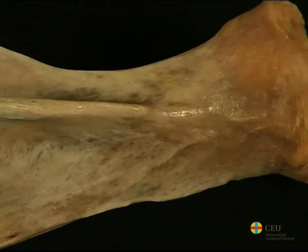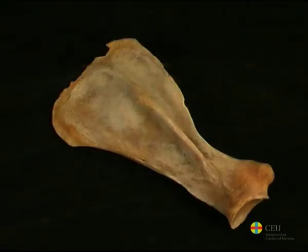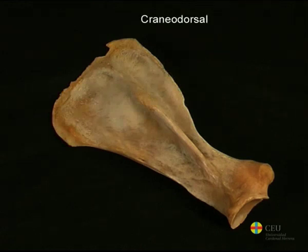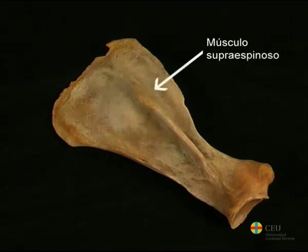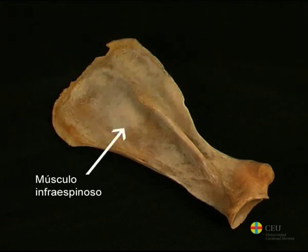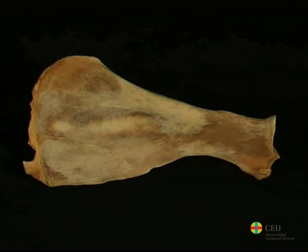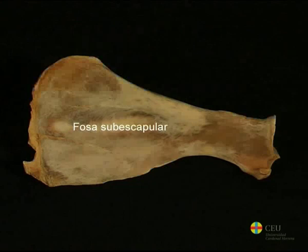The spine divides the lateral surface of the scapula into two unequal surfaces. The one situated craniodorsally is the supraspinous fossa, and the one in the caudoventral position is the infraspinous fossa, which is greater in size. The former is occupied by the supraspinous muscle, and the latter by the infraspinous muscle. The costal surface is medial and largely comprised of the subscapular fossa, which is occupied by the muscle of the same name.